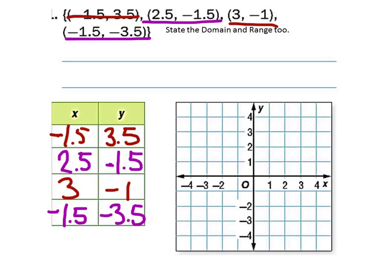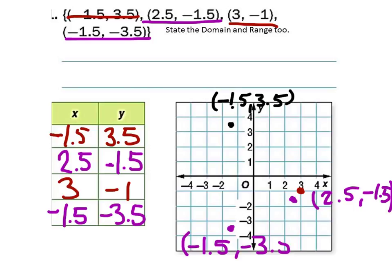All right, now that we have this table let's go ahead and graph. So first one is negative 1.5 and 3.5. Do we need to label this? If you do not label these on the test then you will get it wrong. The next point, 2.5 and negative 1.5, we're about here. The next point, 3 negative 1, is right here. Why do I not have to label this one? Because it's the simplest one, it's on a grid corner. Negative 1.5 and negative 3.5 right here.